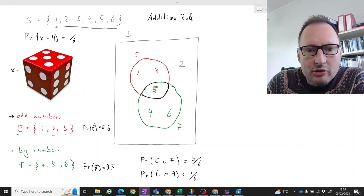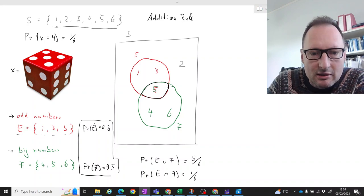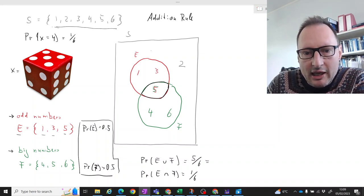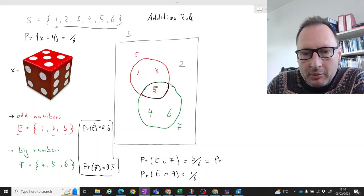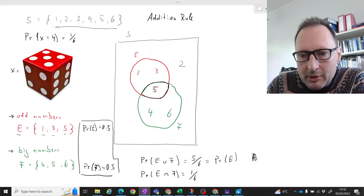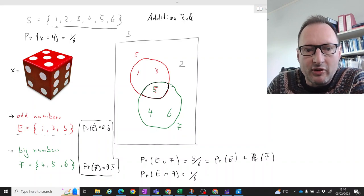But how do we calculate that based on these two probabilities? How does that probability relate to the probability of E and the probability of F? So it's not just a plus here, because that would be 0.5 plus 0.5, that would be 1. But we need 5 over 6.